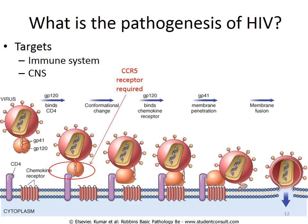Once docking takes place, a conformational change ensues — gp120 binds to the chemokine receptor CCR5, another plasma membrane-bound protein on the CD4 positive T cell. Then gp41 allows penetration into the membrane, and membrane fusion occurs. The virus core enters the cell, reverse transcriptase manufactures DNA, and the cDNA is integrated into the nucleus. At this point we may enter a latent period called clinical latency, where the viral information is present in the host cell but may not be actively replicated for months or even years.